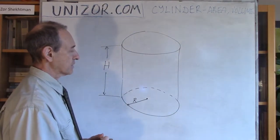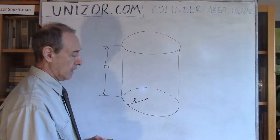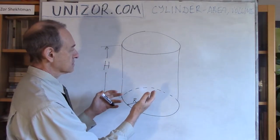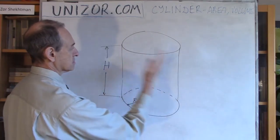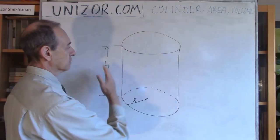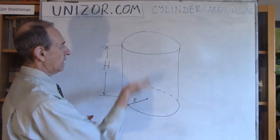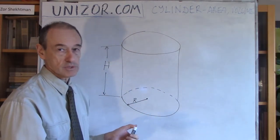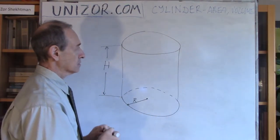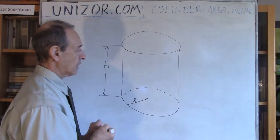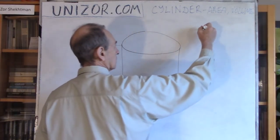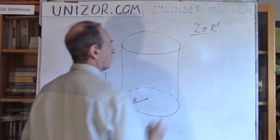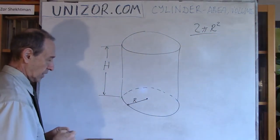Let's talk about the surface first. The surface of this object contains the side surface — the rounded cylindrical surface — and two bases. The two bases are simple: they are two circles. So the area of one base is πr², and the area of two bases is 2πr².